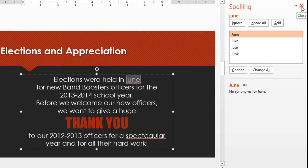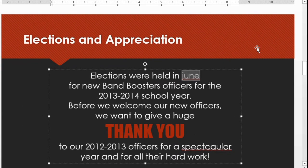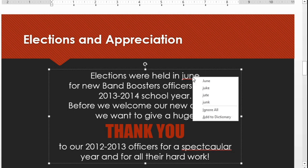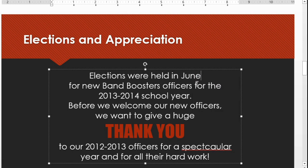Let's close the Spelling pane for now and look at some of the other errors on this slide. They're easy to spot because PowerPoint marks spelling errors automatically using these red wavy lines. Here I spelled the word June correctly but forgot to capitalize it. To correct the error, all you have to do is right-click and choose the proper spelling. Looks like I also misspelled spectacular.